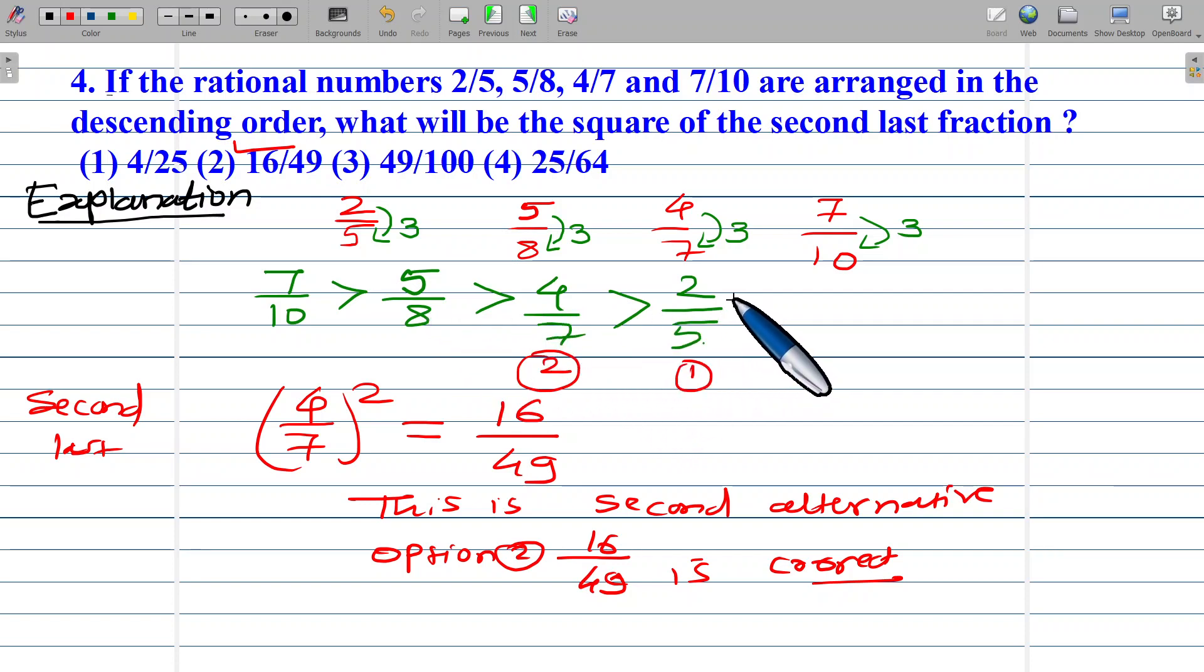4 upon 7 is in the second last position. 4 upon 7 squared is 4 squared equals 16 and 7 squared equals 49, so the answer is 16 upon 49. The second option, 16 upon 49, is the right answer.